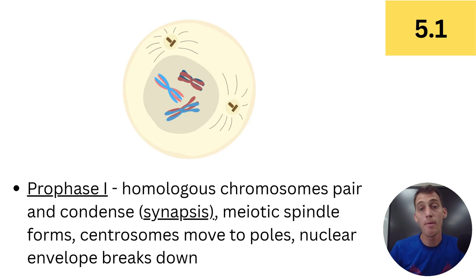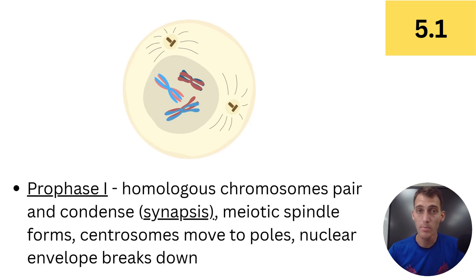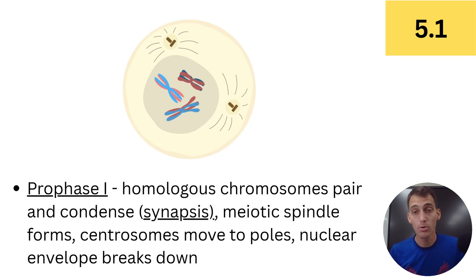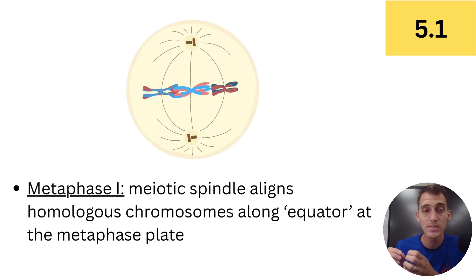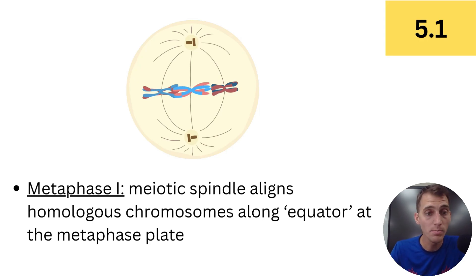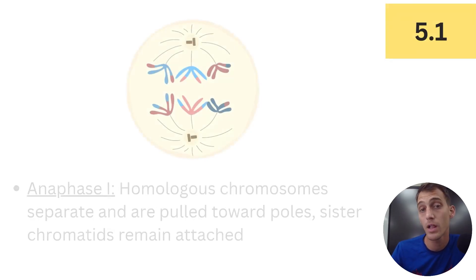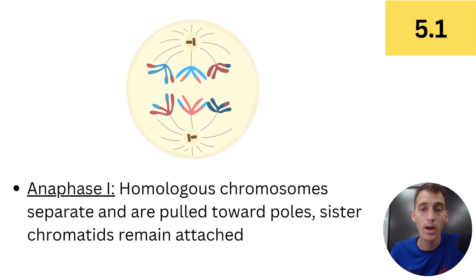The meiotic spindle forms — centrosomes move to the poles, assembling the meiotic spindle and attaching to the centromeres of the chromosomes — and the nuclear envelope breaks down. That's prophase I. Directly following is metaphase I: the homologous pairs line up along the middle of the cell, the meiotic spindle aligns them across the equator, and those spindles are attached at the centromeres of the homologous chromosomes.